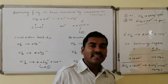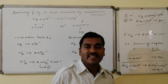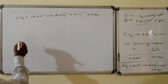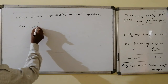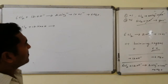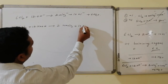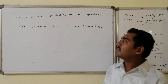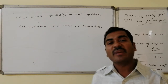Now involving spectator ions: considering sodium hydroxide as the base, sodium is the spectator cation. Adding sodium to all ionic species gives the molecular form: 6Cl₂ + 12NaOH → 2NaClO₃ + 10NaCl + 6H₂O. This is the complete balanced molecular equation for the reaction of chlorine with a base to give chloride and chlorate by the oxidation number method in basic medium.